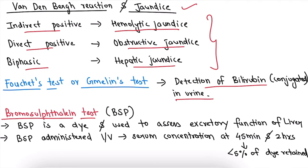The next test is the bromosulphthalein (BSP) test. BSP is a dye used to assess the excretory function of the liver. It is administered via IV route and the serum concentration is checked at 45 minutes and 2 hours. If less than 5% of the dye is retained in serum, the person is normal. If a higher percentage is retained, then there is some problem in the liver.